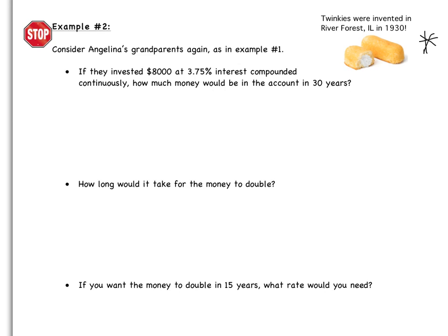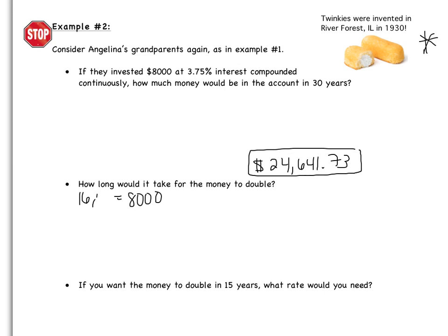You should have had enough time to try this one on your own. First part: if they invested $8,000 at 3.75% interest compounded continuously, how much money would be in the account in 30 years? You should have gotten $24,641.73 by substituting for P, E, R, and T and solving for Y. Next: how long would it take for the money to double? They started with $8,000, so doubling means ending at $16,000.